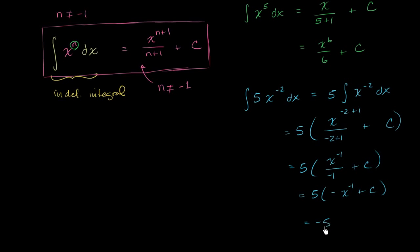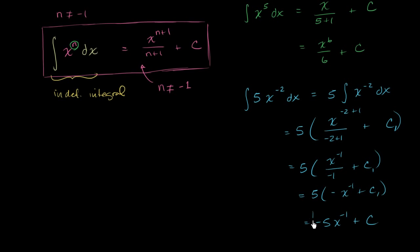We could write plus 5 times some constant c1, but 5 times c1 is just another arbitrary constant we can call c. So the final answer is negative 5 x to the negative 1 plus c. And once again, you can evaluate the derivative to verify you get the original expression.